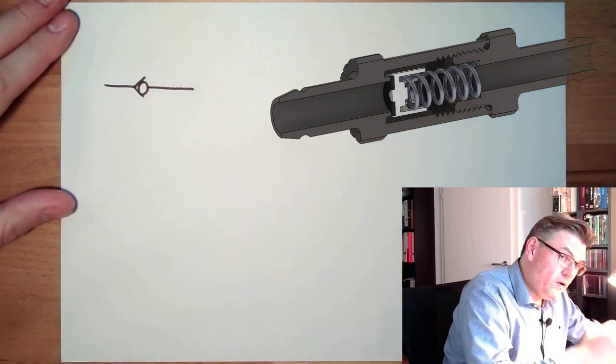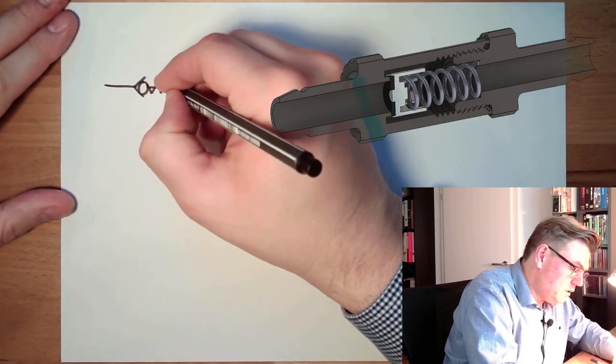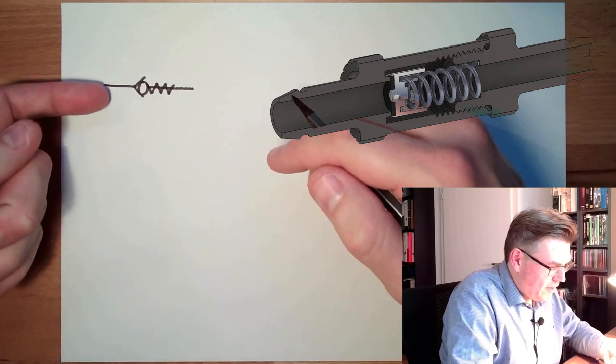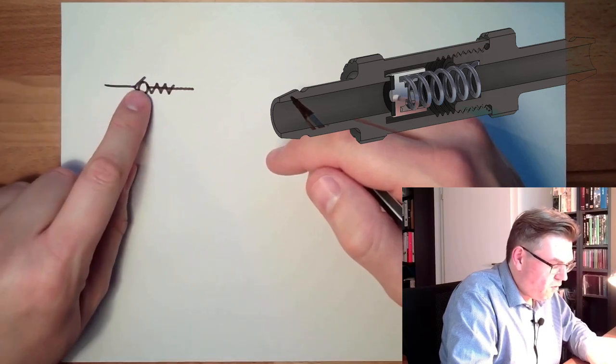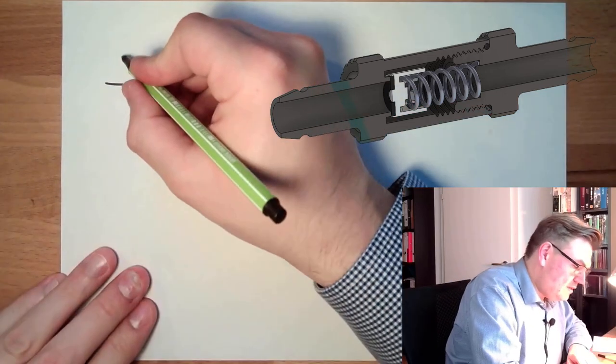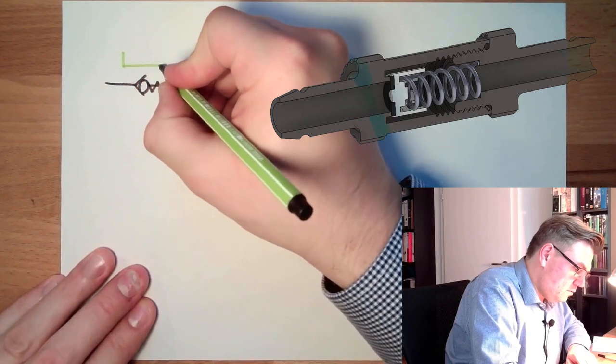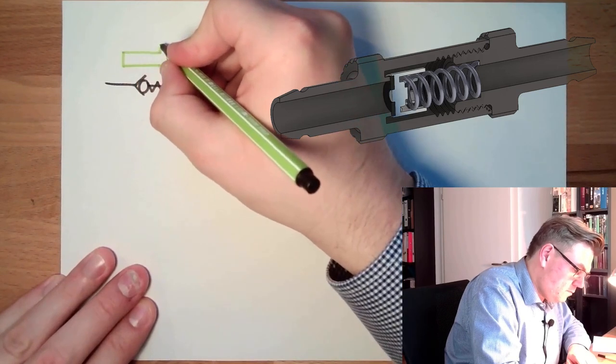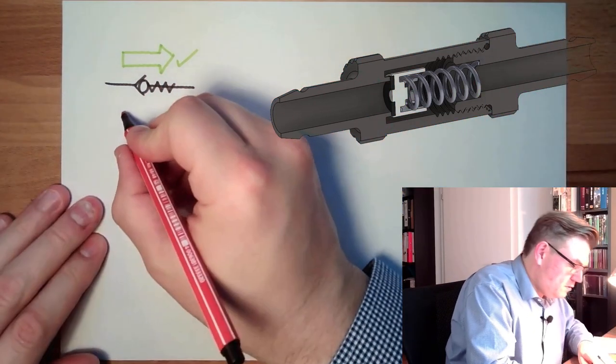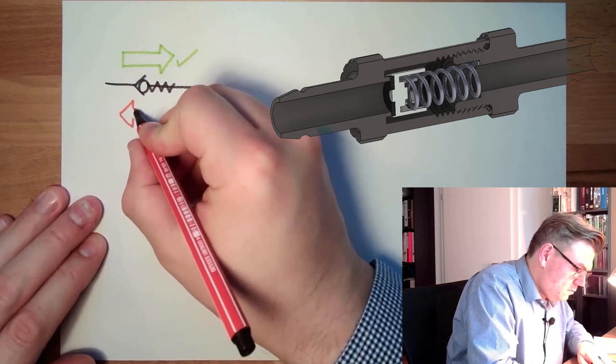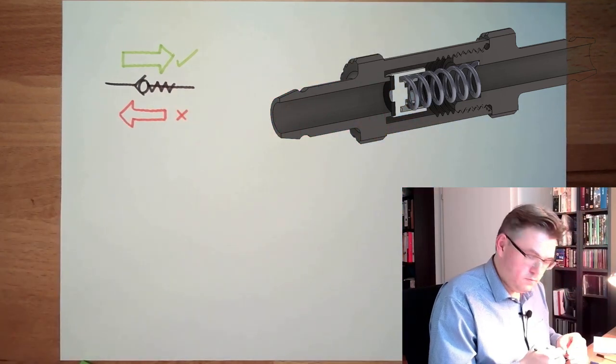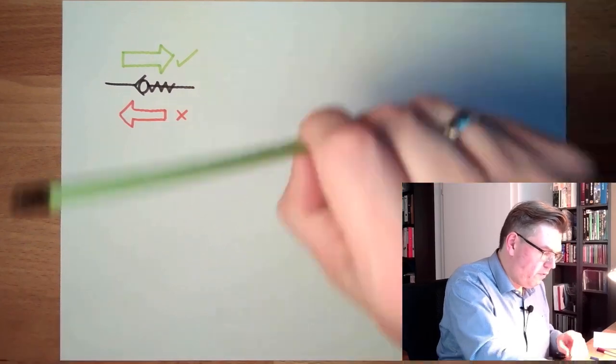This is basically the symbol of the non-return valve. And if it's spring loaded like this valve here, we have to draw the spring. So the spring will hold the ball in place. In any case from here, there's enough pressure, we can lift off the ball and air can flow. So in this direction air may flow. In this direction it cannot. This is the non-return valve, the symbol of the non-return valve.